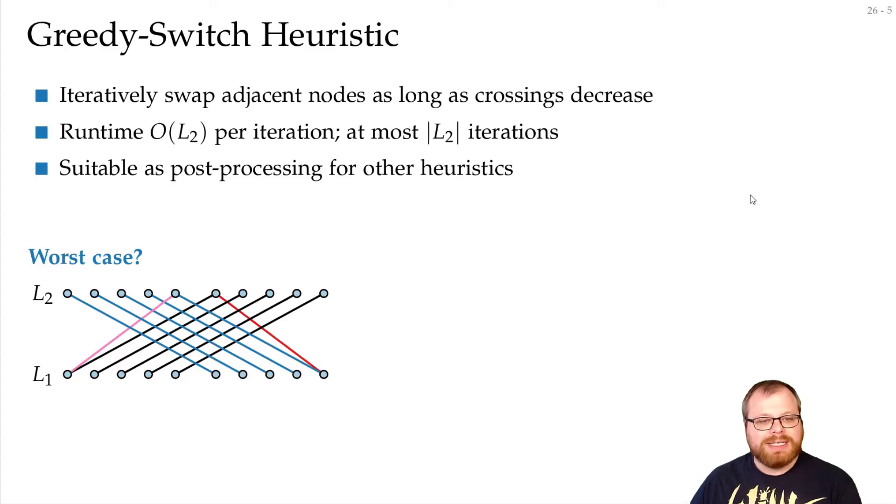But if we only use it, then it's not that great. Look at this example. We have a bunch of blue edges, a bunch of black edges, and this pink and red. All the blue cross all the black edges, and there are no local changes that we can make that improve it. For example, if we switch these two, we get rid of this one pink-blue crossing, but now these two blue edges will cross, so it doesn't improve it.